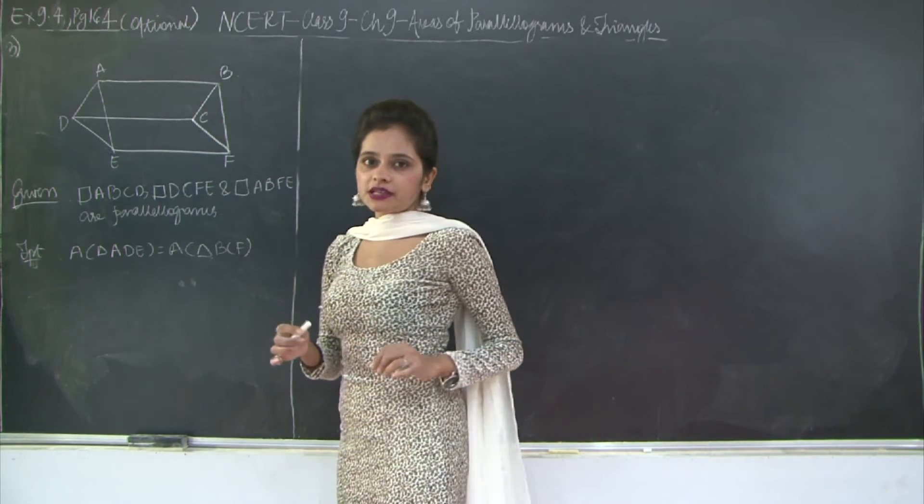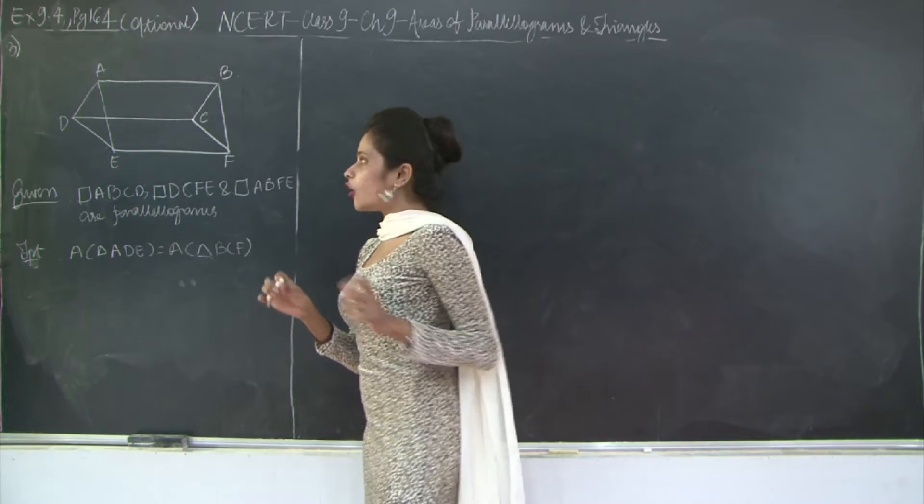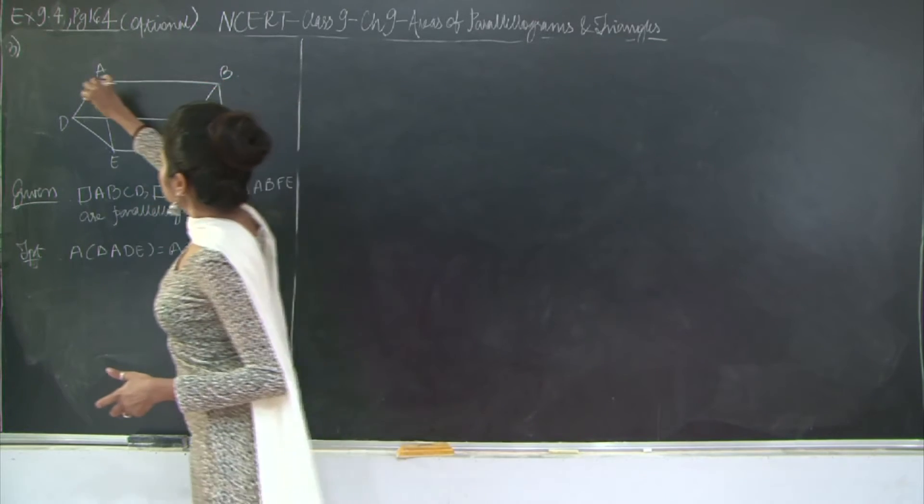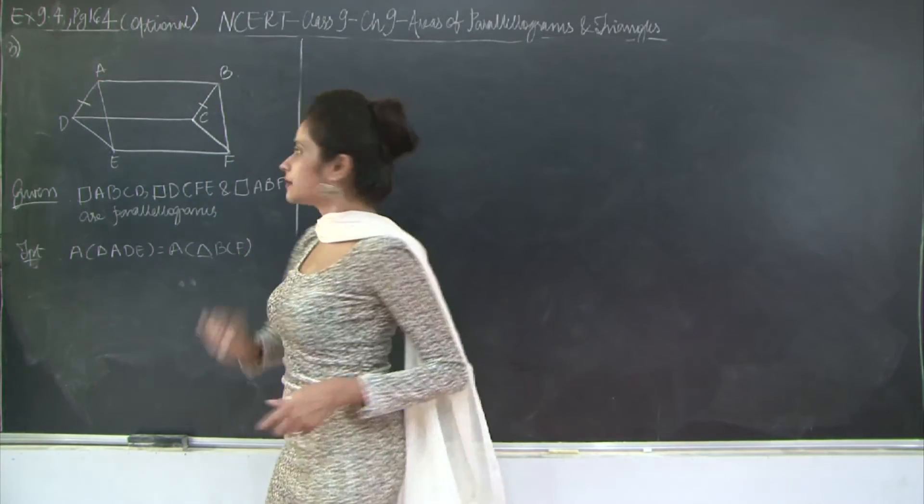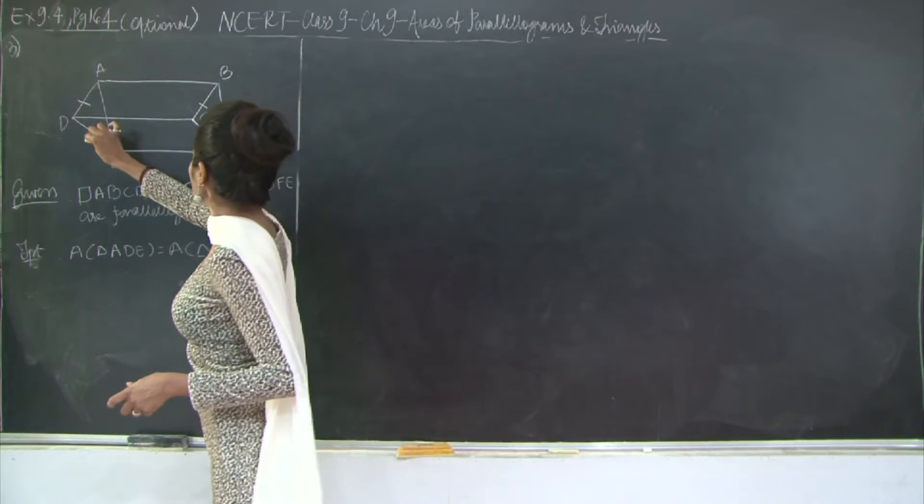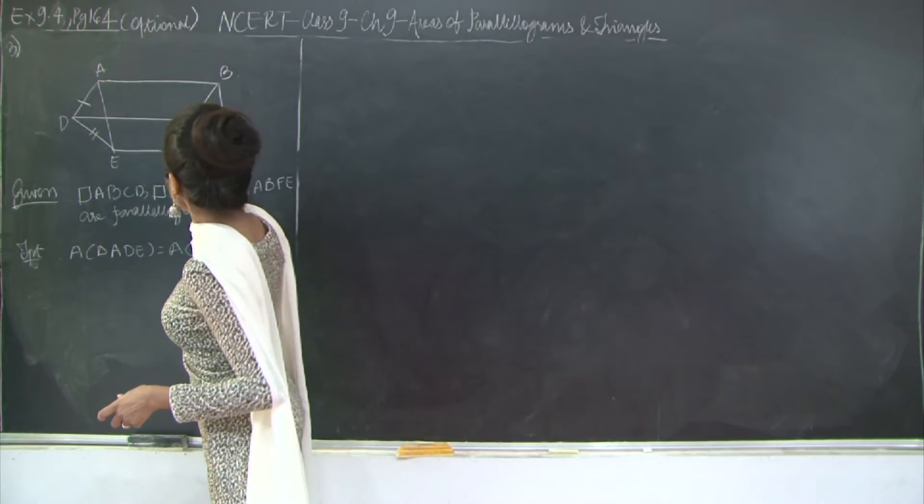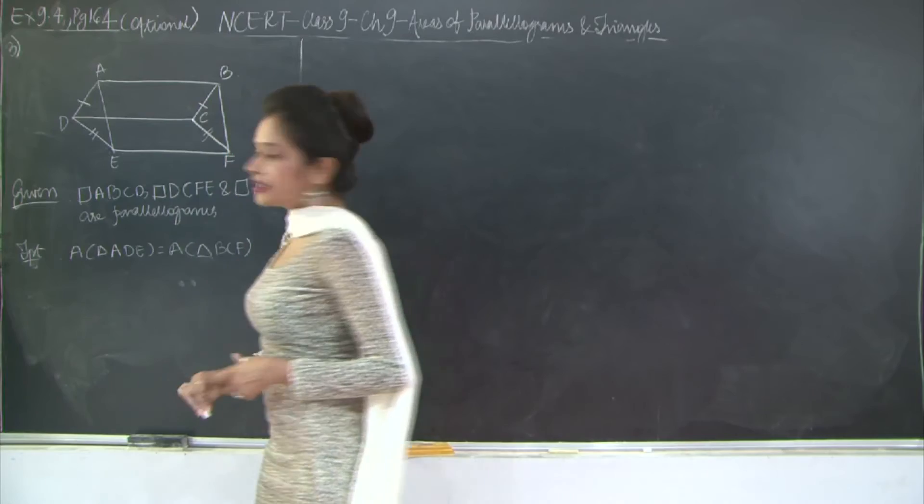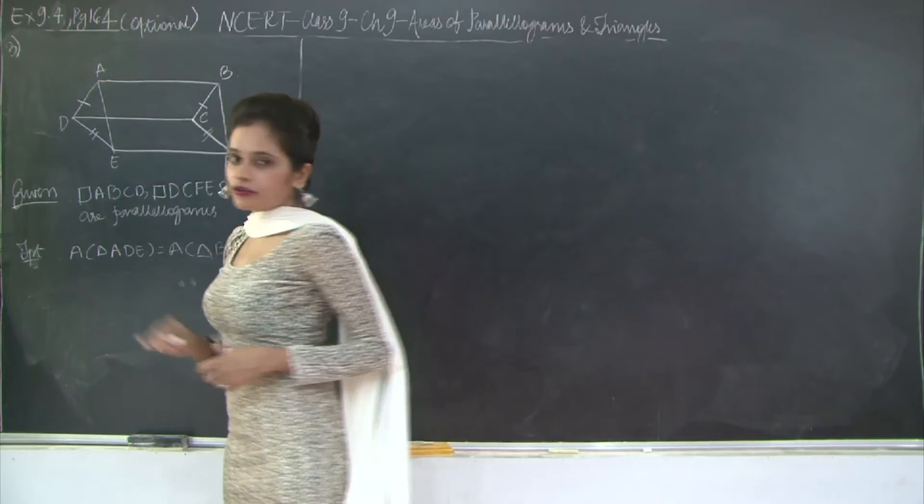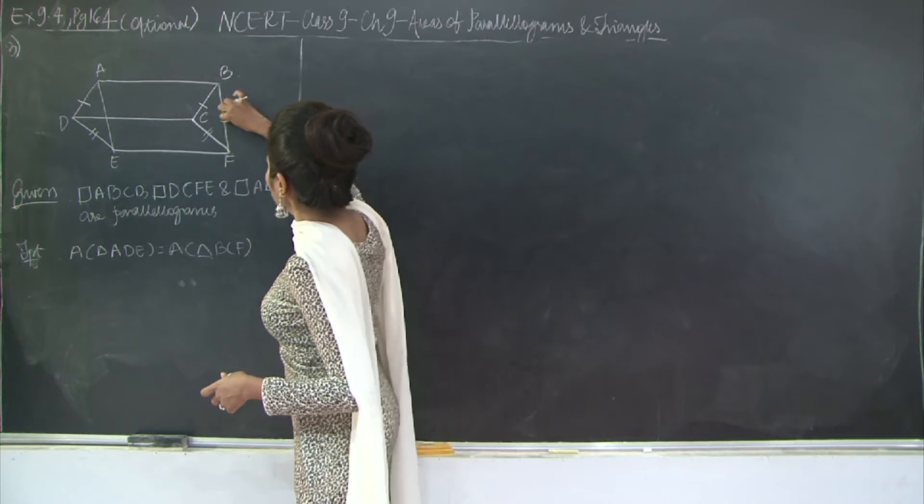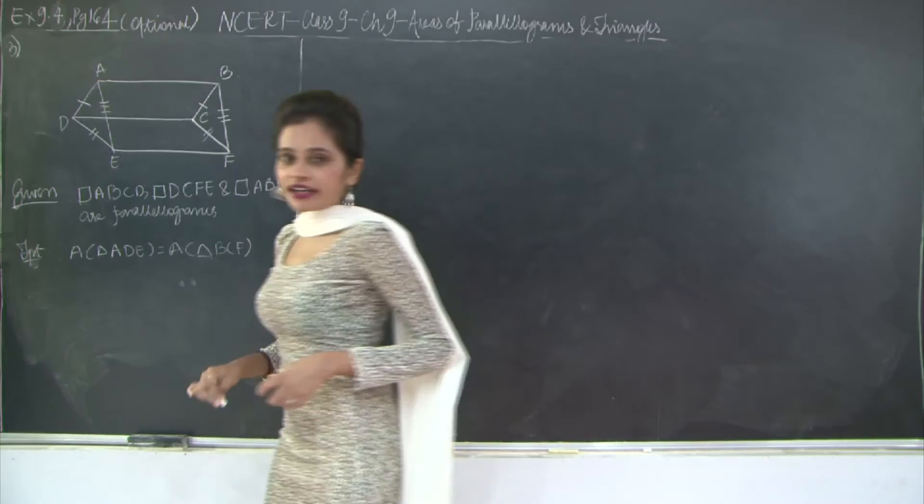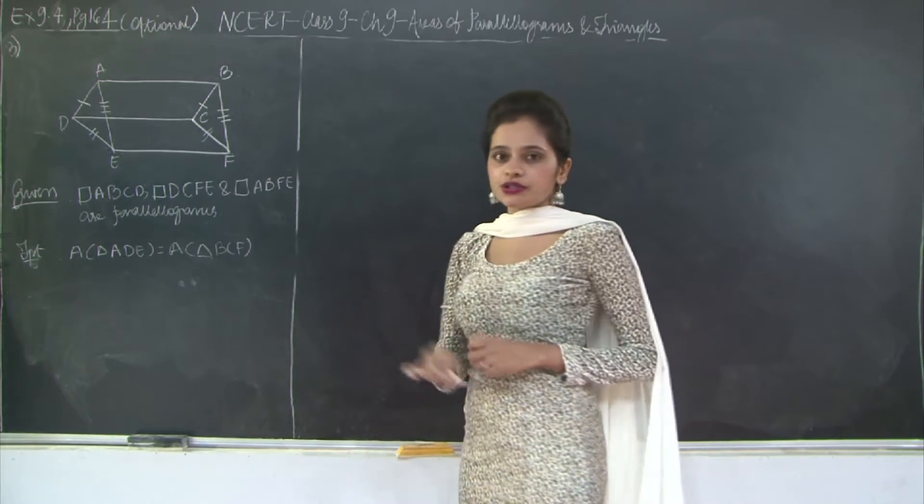See, first of all, you have ABCD as your parallelogram. Therefore, what do you get? The opposite sides are equal to each other. So I get BC is equal to AD. Similarly, for parallelogram DCFE, I get DE is equal to FC. And also I have ABFE is a parallelogram. Therefore, what do I get? BF is equal to AE.